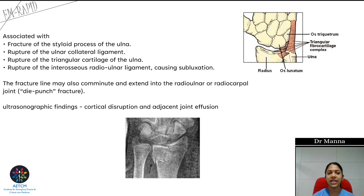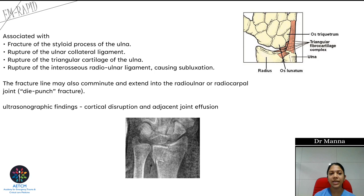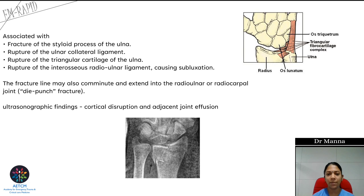Associated injuries include fracture of the ulnar styloid process, rupture of the ulnar collateral ligaments, and rupture of the triangular cartilage of the ulna. There can also be rupture of the interosseous ligaments connecting the radius and ulna, which can cause subluxation of the distal radio-ulnar joint. If the fracture line extends to the radio-ulnar or radiocarpal joint, this is called a die-punch fracture.